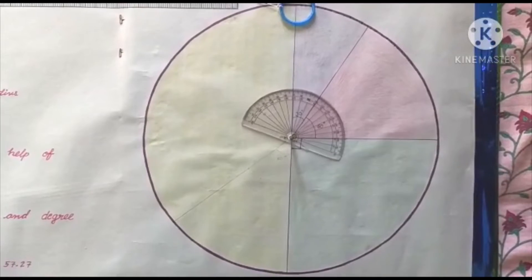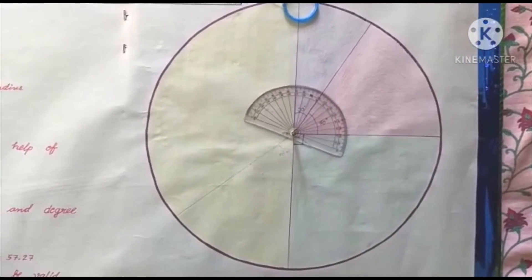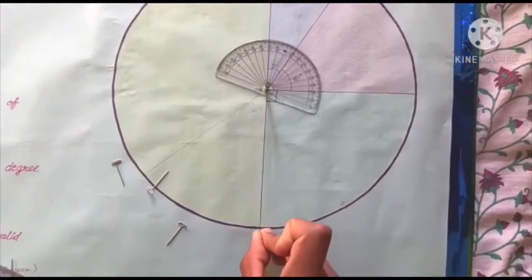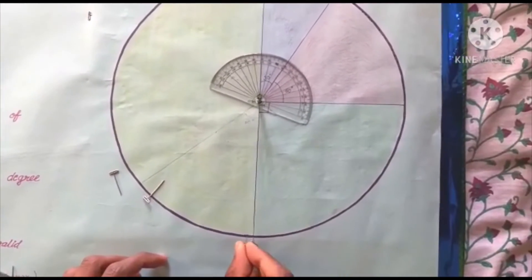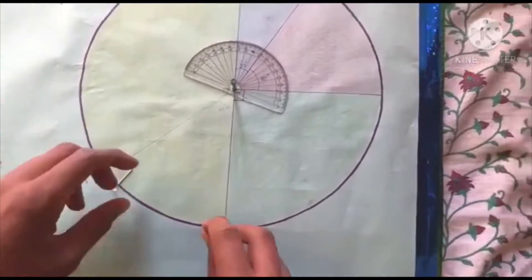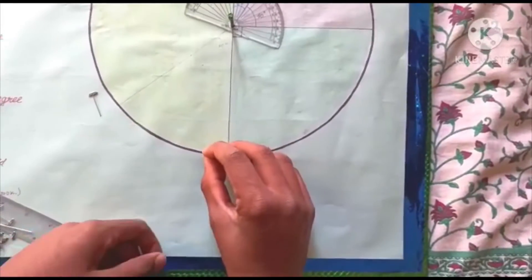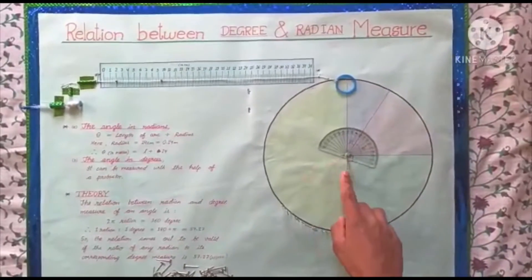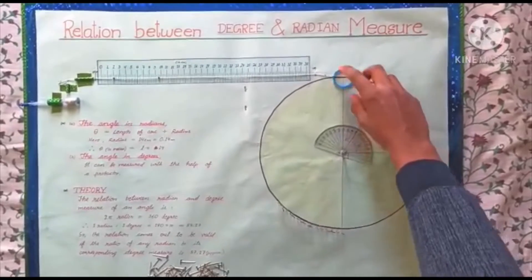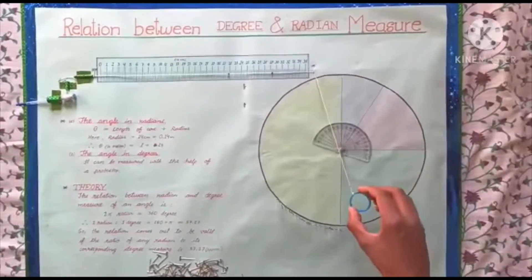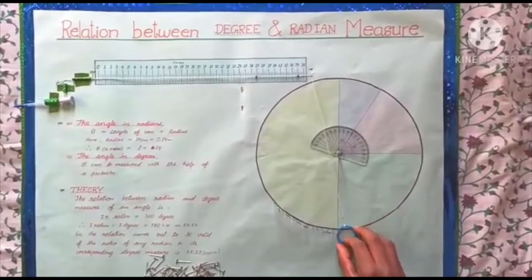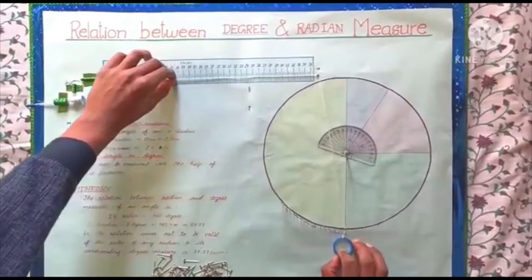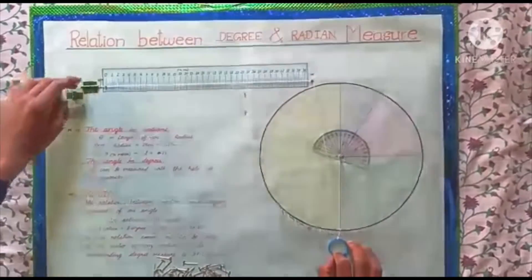Now to measure the length of the arc, we fix pins in the arc like that. We have now fixed all the pins. The angle is 50 degrees, so we have to measure the length of the arc subtended by the 50 degree angle. So we stretch the thread to measure the length of the arc.